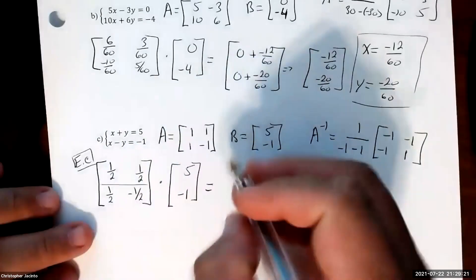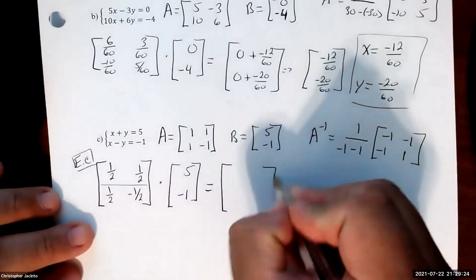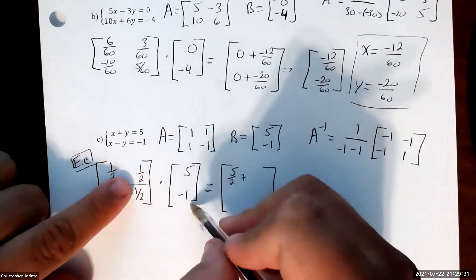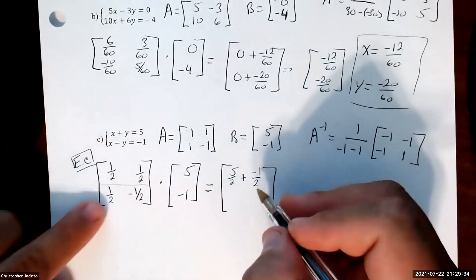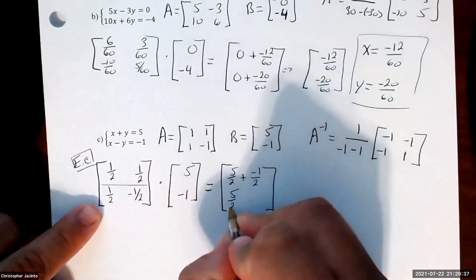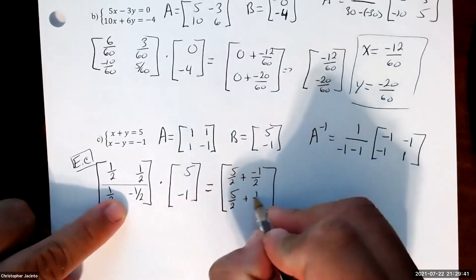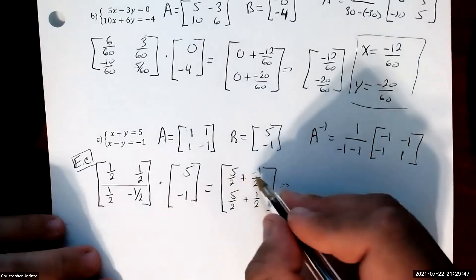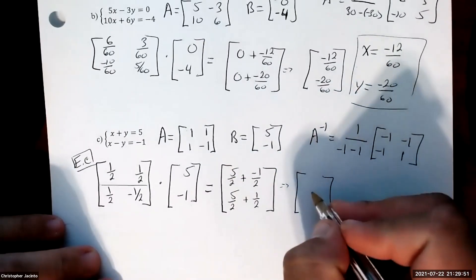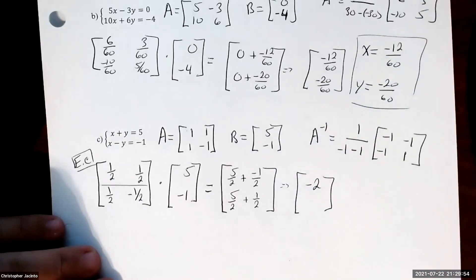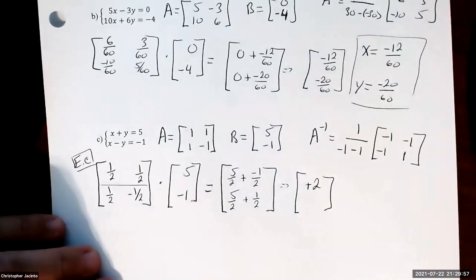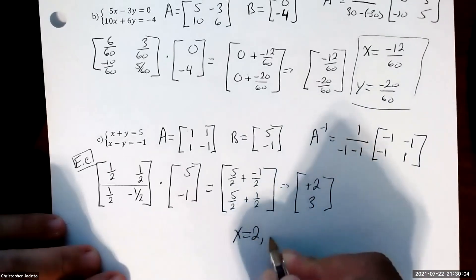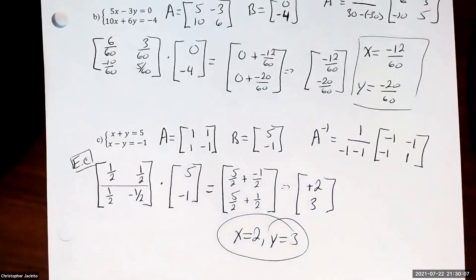Okay, let's see. So it's going to be 5 over 2 plus negative 1 half, and in the bottom 5 over 2 plus 1 half. This ends up being 4 over 2, which is 2, and 6 over 2, which is 3. So x equals 2 and y equals 3.